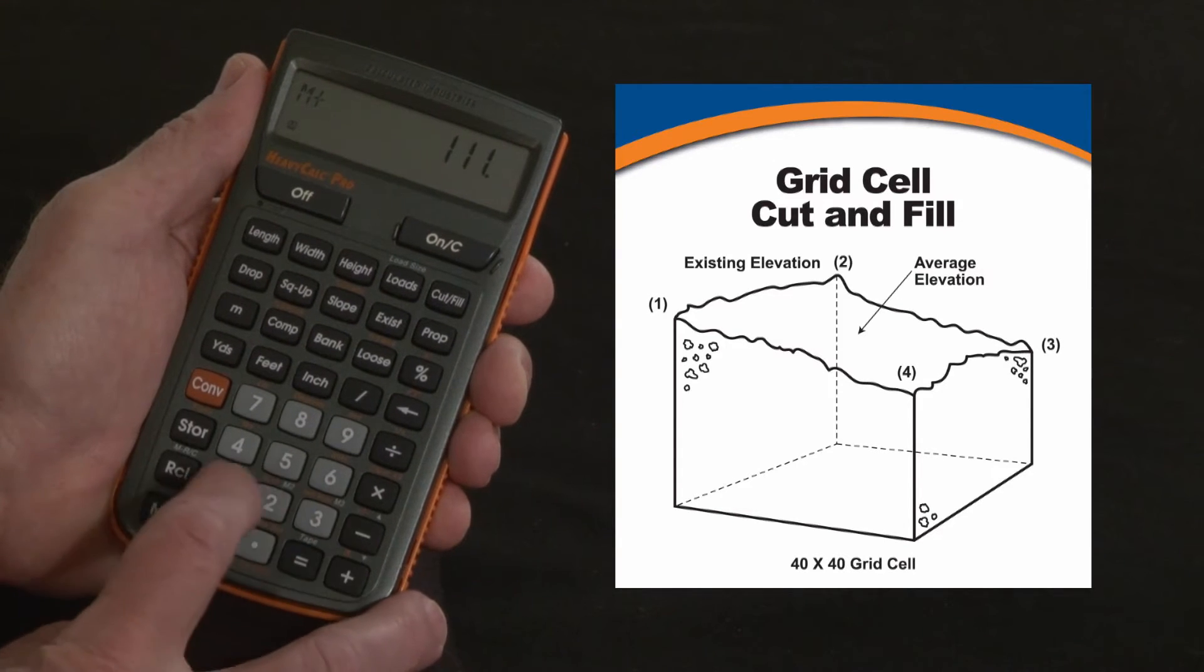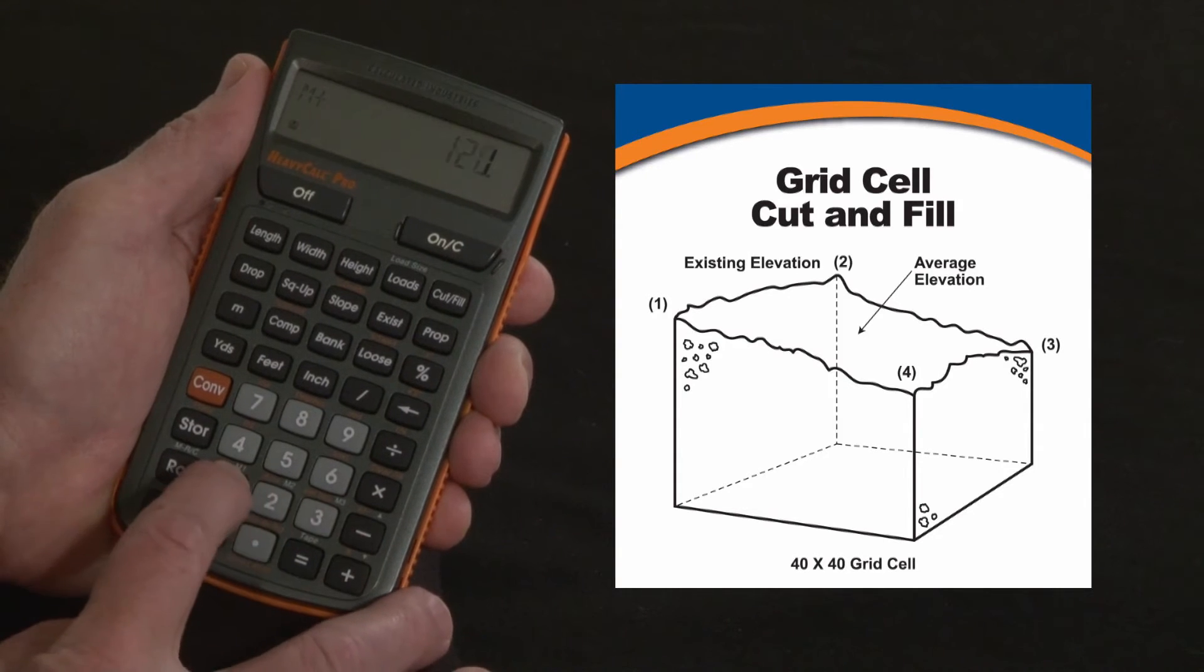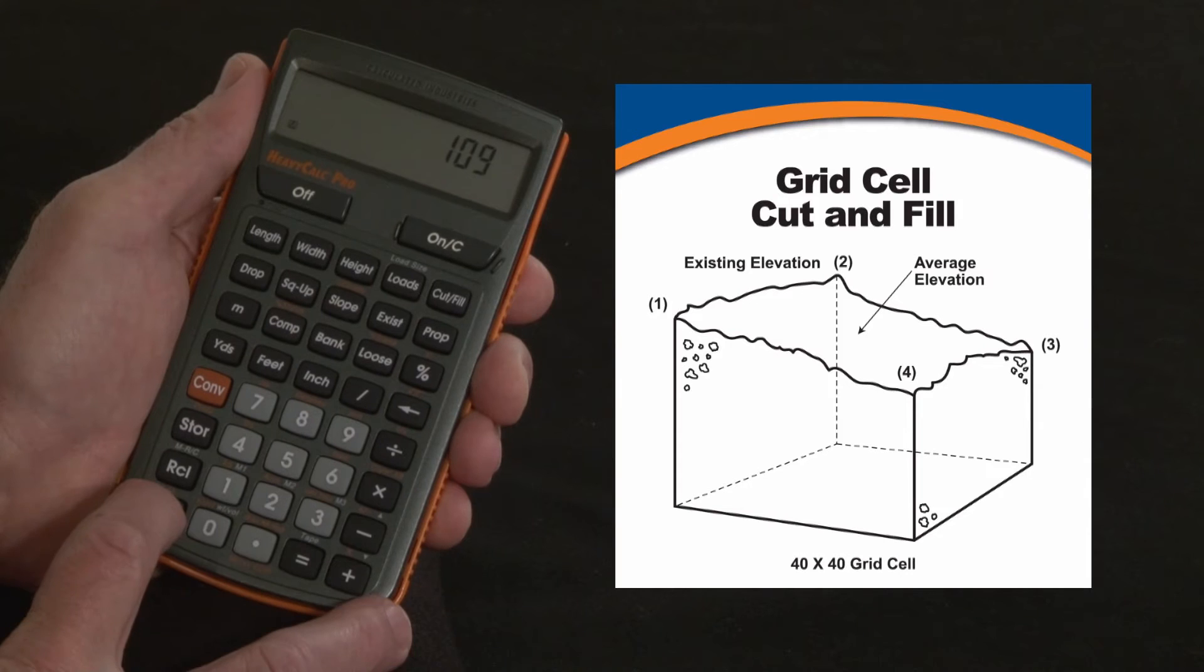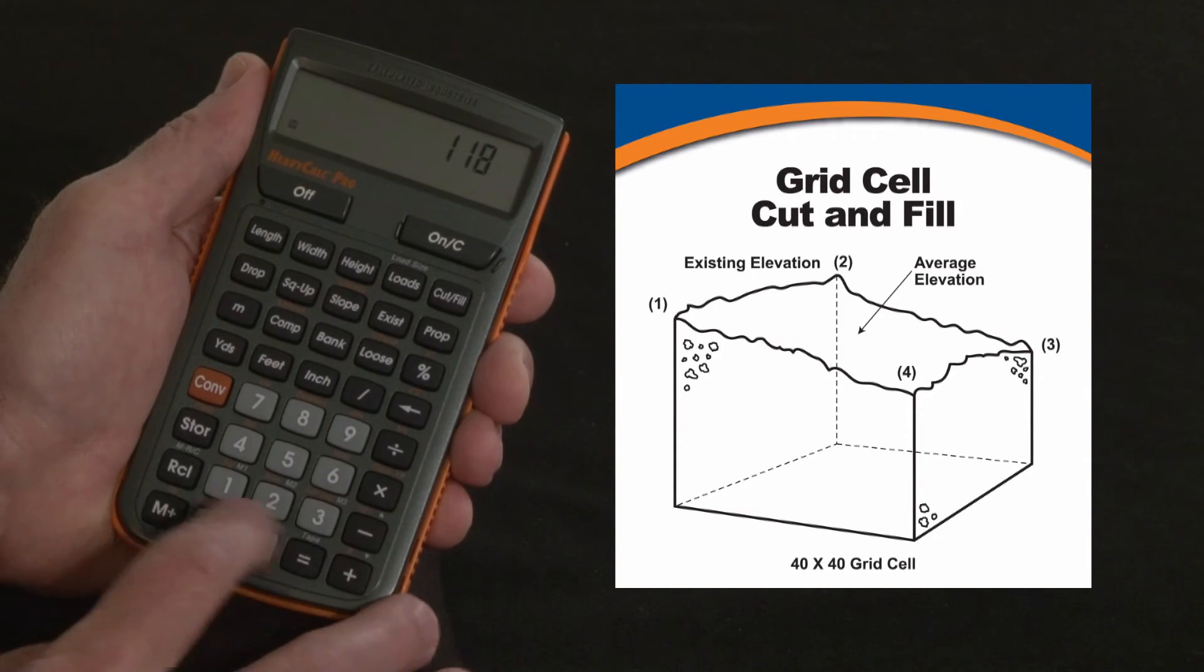I shoot the second one and get 120, put that in the memory. Third one came in at 109, put that in the memory. And then the last one was say 118, I put that in the memory.